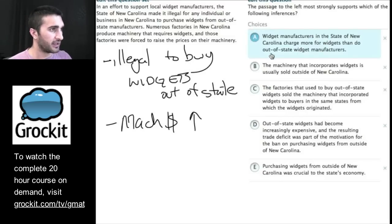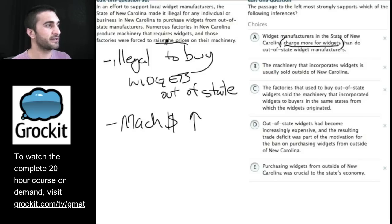Let's take a look. Answer choice A. Widget manufacturers in the state of New Carolina charge more for widgets than do out-of-state widget manufacturers. Okay, let's get all these pieces. So, widget manufacturers in the state of New Carolina, that's in there. Charge more for widgets. Why would that have to be true? Let's hold on to that piece. Then do out-of-state widget manufacturers. They talk about out-of-state widget manufacturers. I just got to understand whether this is supported. Charge more. Why would it have to be true that they charge more? Well, it says that they have to raise their prices on their machinery and then that they require widgets. So, I'm going to hold on to A.